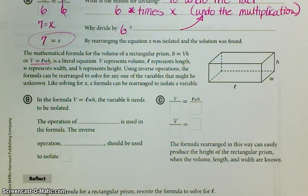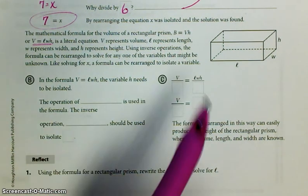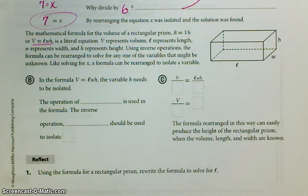It's just like solving for x. We're going to rearrange to isolate the variable that we want. It says in the formula V equals length times width times height, the variable h needs to be isolated. So let's say that you have volume and you have length and you have width, but you need height. So you need the formula to say height equals whatever it is.